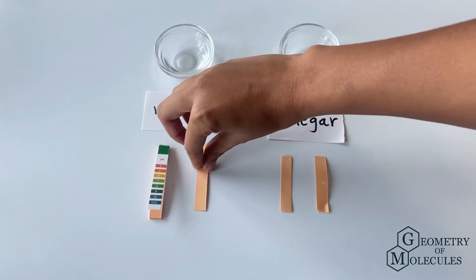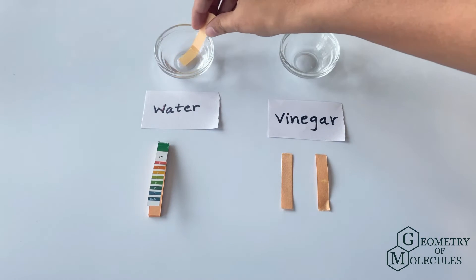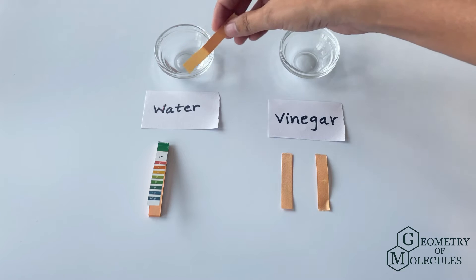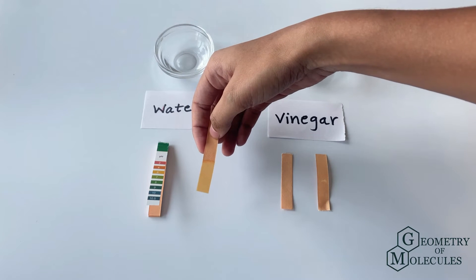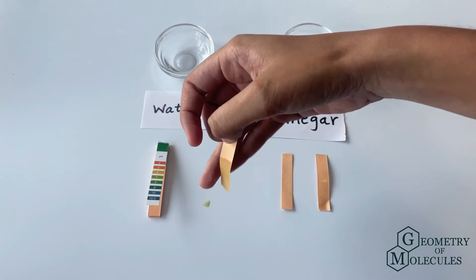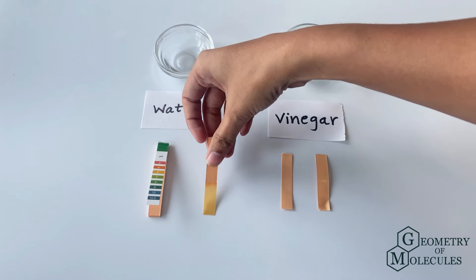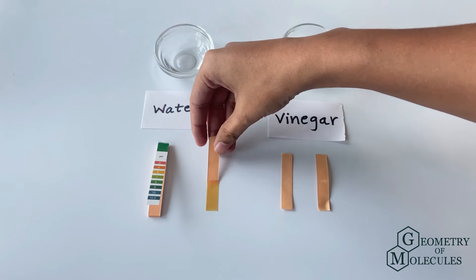Now let us test that by dipping our pH strip in water. We know that water is neutral, and as shown in this guide, the pH strip should change its color to light green. As you can see, the strip has instantly changed its color from orange to light green.